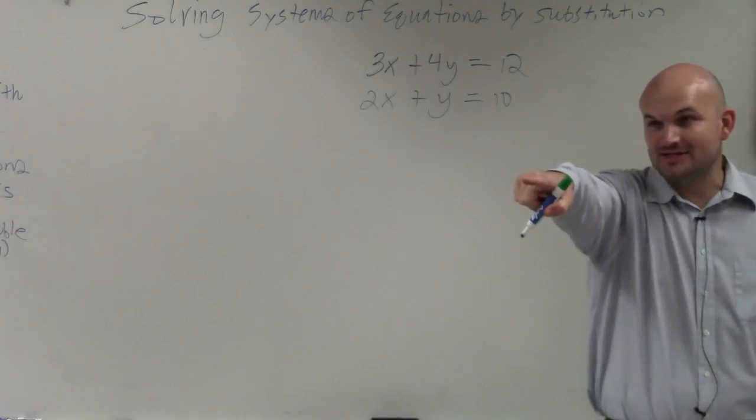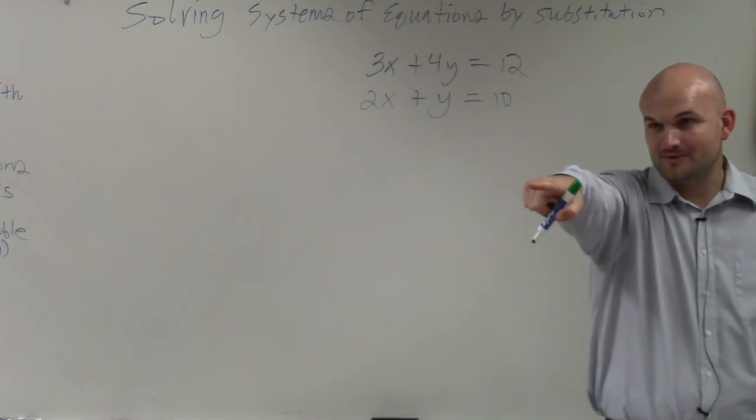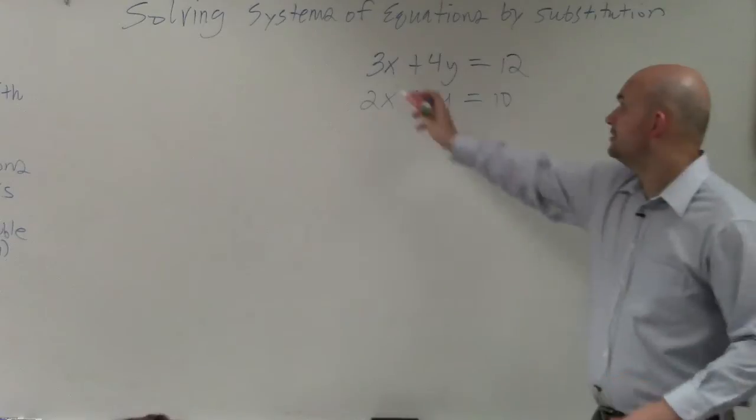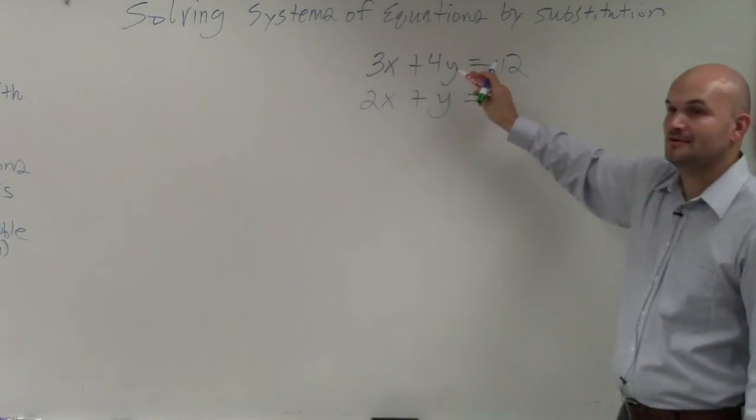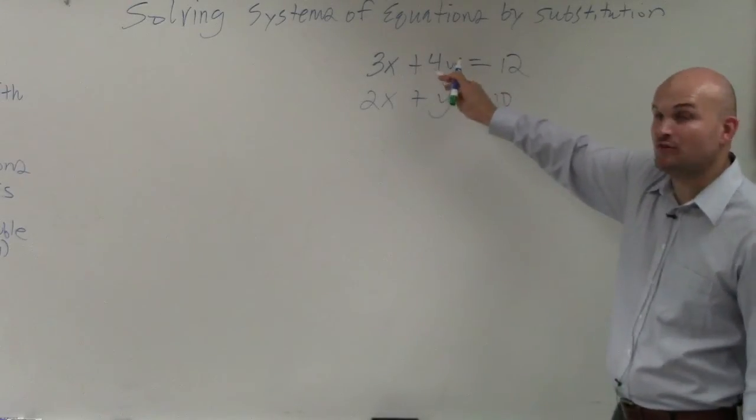Do you see a variable that has 1 or negative 1 as a coefficient? No? Yes. Which one? The y. This y? The y below. The y below, because that one has a coefficient of 1, right?